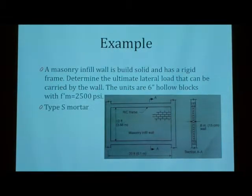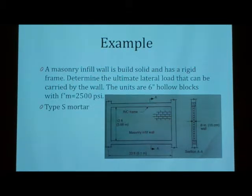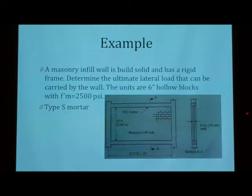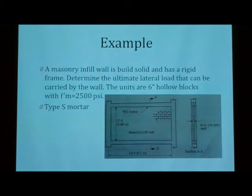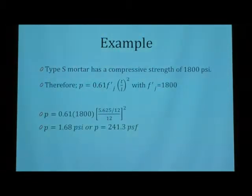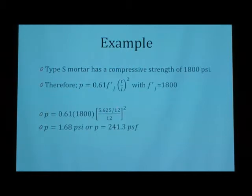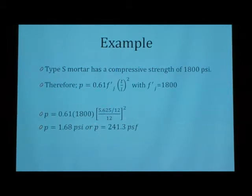So, I'm just going to do a little example real quick. Basically, you have a masonry infilled wall that is built solid, and it has a rigid concrete frame around it, and you're asked to determine the ultimate lateral load for the 6-inch hollow block, if the compressive strength of the masonry is 2500 psi, and it's a running bond pattern. So, from that, you can look in the MSJC and find the strength of the hip mortar joint, and it's actually 1800 psi, so it's less than 2500, so you need to use that for your F-IJ. If you plug it into your equation with your 5.65-inch hollow block, you get 1.68 psi, or 241.3 PSF for the wind load, which is pretty good.